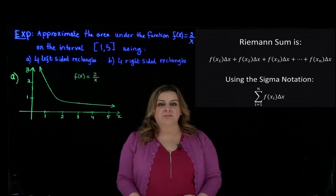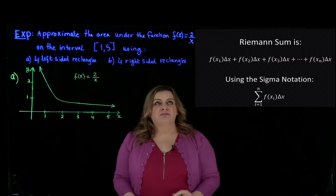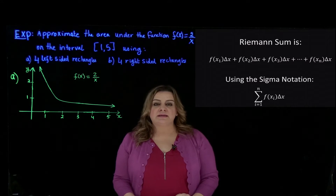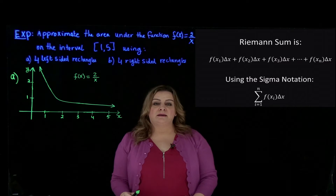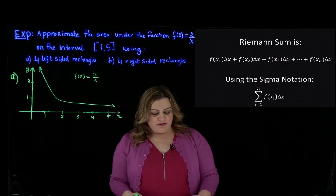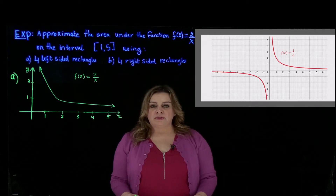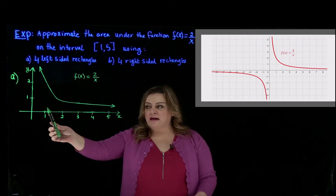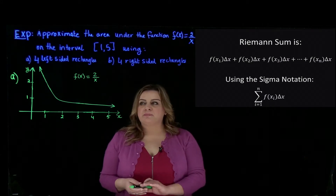Let's start with our example and apply the Riemann sum method. We are asked to approximate the area under the function f of x equals 2 over x on the closed interval from 1 to 5. In part A we want to use the four left-sided rectangles, and in part B the four right-sided rectangles. The graph of the function is shown on our screen, and we are interested in the interval from 1 to 5, which is the right side of the graph.